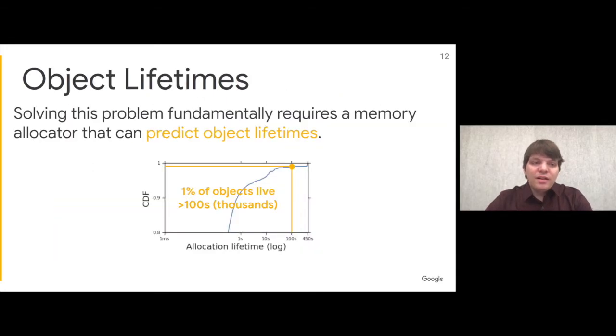This is fundamentally a difficult problem for memory allocators to solve, because it requires knowing at allocation time what the long-lived objects are. There is a large number of long-lived objects. In this workload, about 1% of all objects were long-lived, which translates to thousands of them.